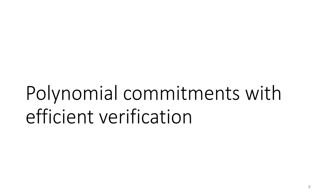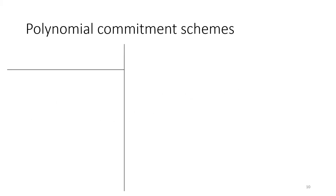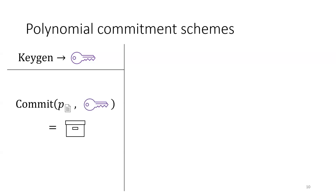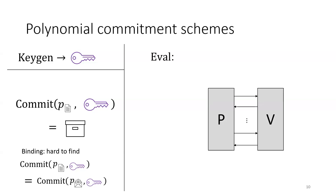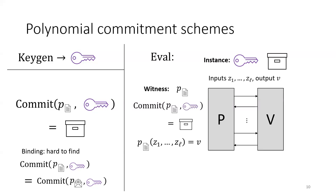A polynomial commitment scheme is a protocol which starts with a key generation algorithm. Using this key, you can compute succinct commitments to different polynomials. Like a normal commitment scheme, this should satisfy a binding property for security. What makes polynomial commitment schemes interesting is an evaluation protocol, in which the instance is a key, a commitment, and some inputs and outputs to a polynomial.